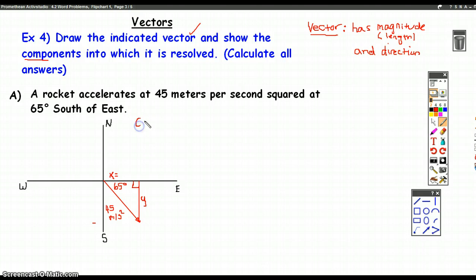So we'd say that the cosine of 65 degrees is equal to adjacent, which we know is x, over hypotenuse, which is 45. And we can multiply both sides by 45.